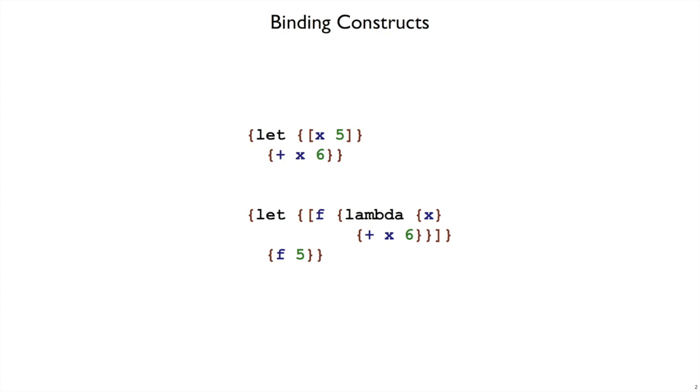Our current curly language has two binding forms. It has let, which binds a variable like x for use in a body, and it also has lambda, which takes an argument x that can be used in the body.